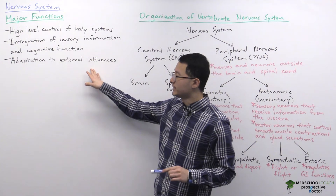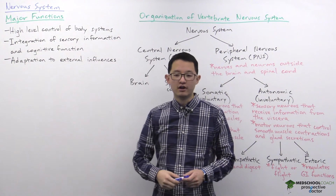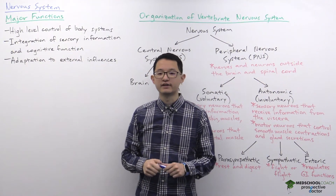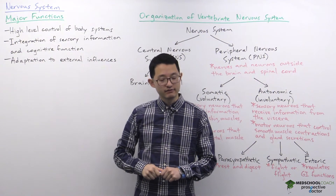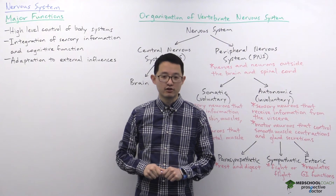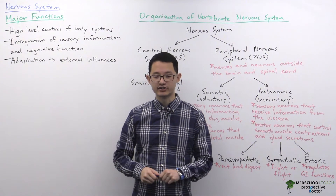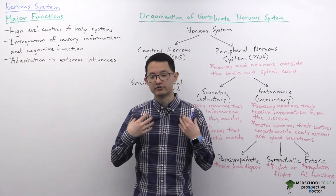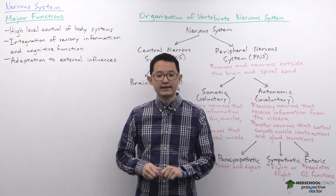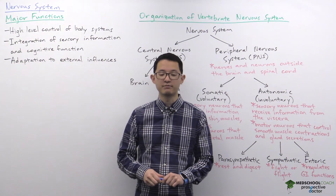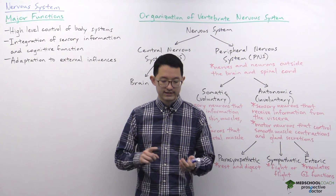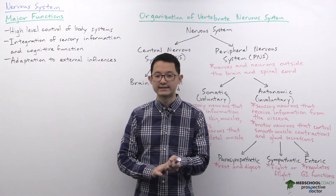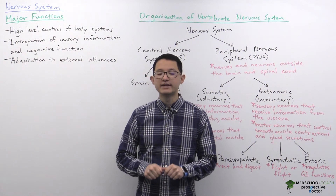We can think of the nervous system as having three major functions. The first is high level control over body systems. When it comes to control of the nervous system over the body, we often think of voluntary control — that you can voluntarily lift your arms or legs — but the nervous system also has control over many other physiological processes. For instance, before you even ingest food, if you see it, smell it, or even think about it, the brain can actually stimulate the gastrointestinal system to start releasing digestive juices and enzymes, essentially priming the body for feeding.